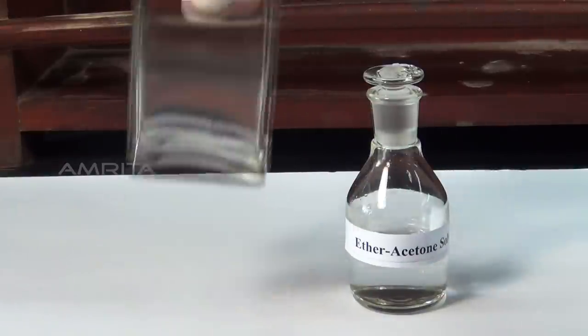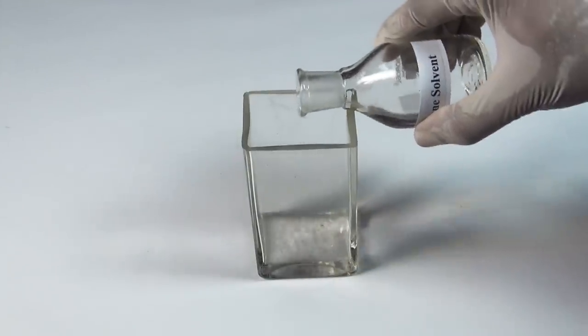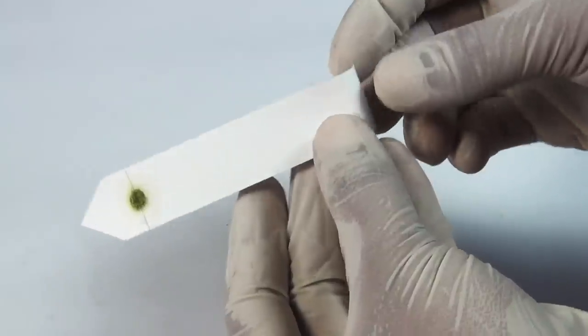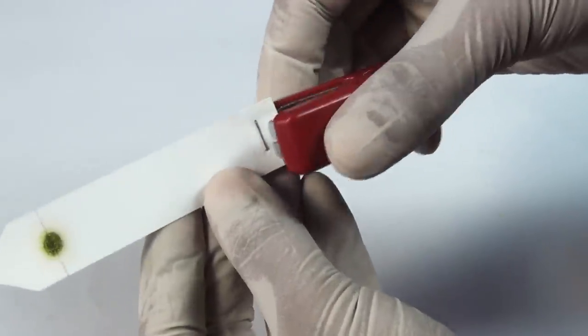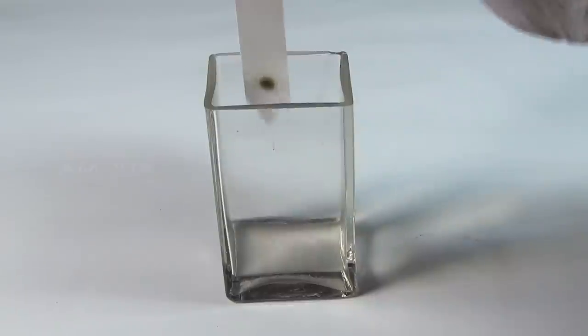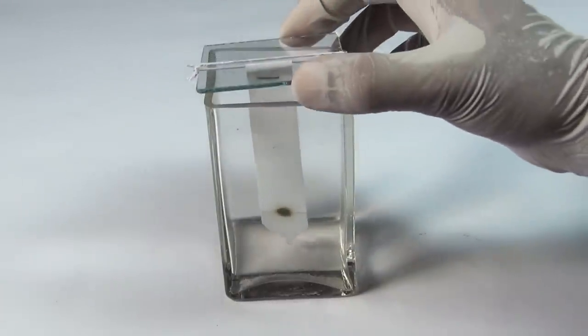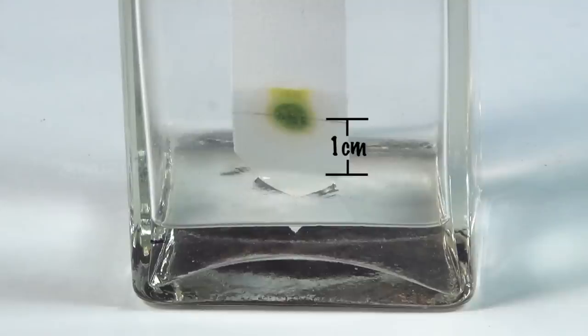Take the chromatographic chamber and pour ether acetone solvent into it. Fold one end of the filter paper strip and staple it. Using a thread, hang the filter paper strip into the chromatographic chamber. The loading spot should remain about 1 cm above the solvent level.